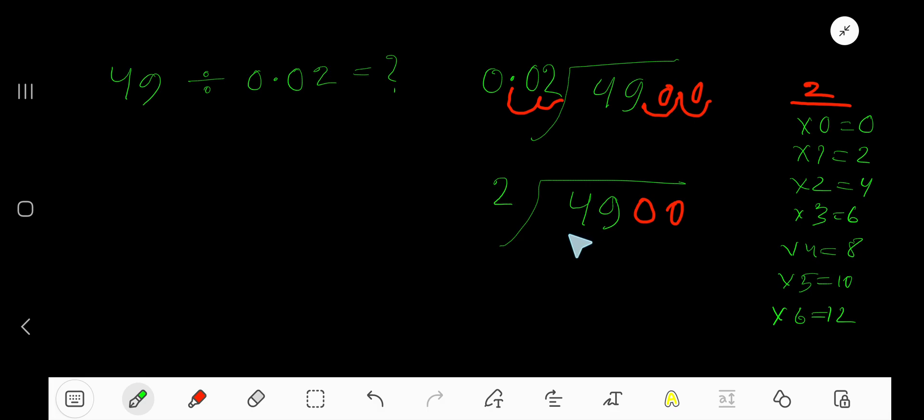Now our dividend is 4. 2 goes into 4 how many times? 2 times. 2 times 2 is 4. Now subtract: 0. Bring down the next digit, 9. 2 goes into 9 how many times? 5 times is too large, so 4 times. 4 times 2 is 8.